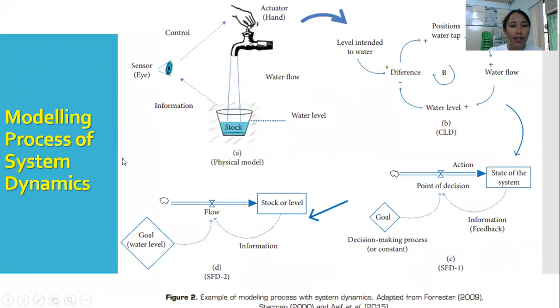The modeling process of systems dynamics is this. First, you start with a physical model or the physical system. What is the observable event? Then, you will translate that one into a causal loop diagram. Then, from a causal loop diagram, you will have a basic SFD model. Then, you will refine that one into a more concise SFD where you can measure the elements and the variables quantitatively.